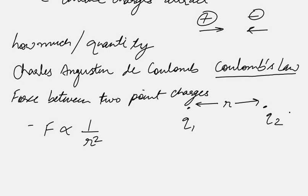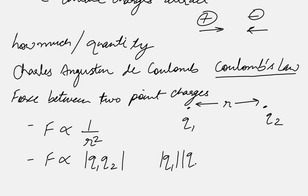The distance between the two charges is r, and force varies as the inverse of r squared. The second statement is that this force is proportional to the magnitude of the product of the charges — or equivalently, the product of the magnitudes of the two charges. The product of magnitudes of q1 and q2 is the same as the magnitude of the product of the two charges, so both forms are mathematically equal.